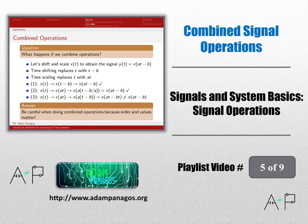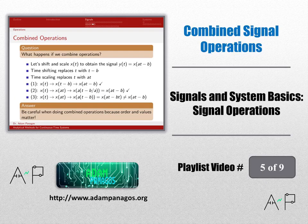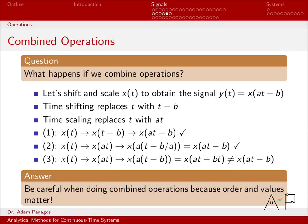Let's look at an example where we're doing combined operations. The previous videos only did a single operation, either a time shift, time reversal, or time compression. Let's see what happens when we start combining operations. So let's start with our signal x(t).